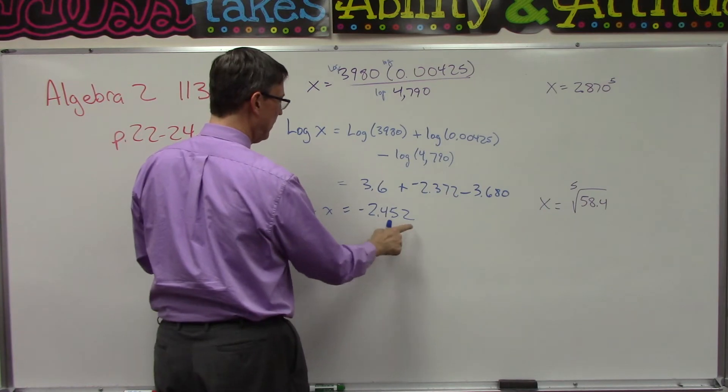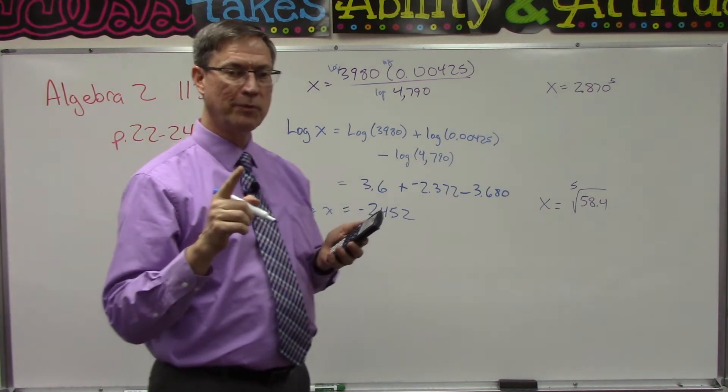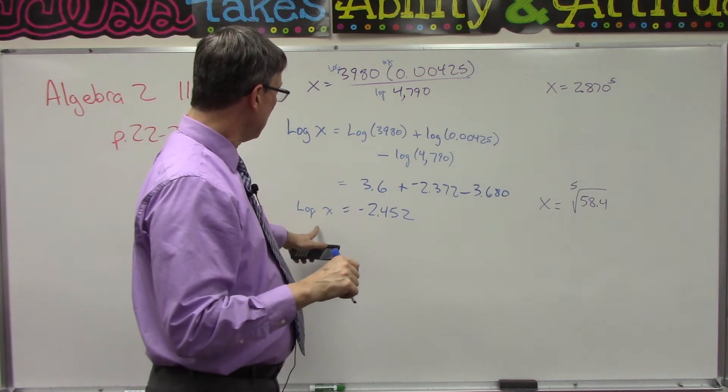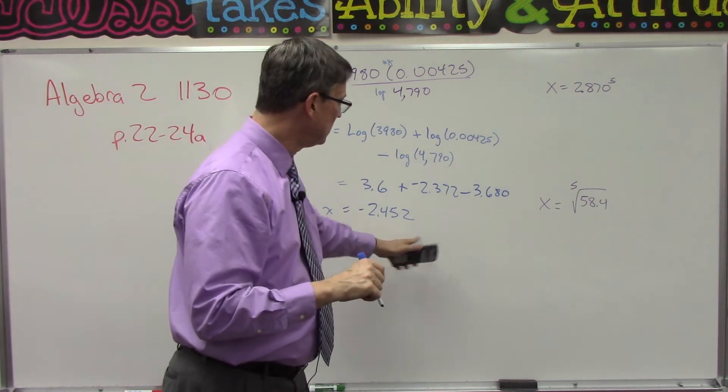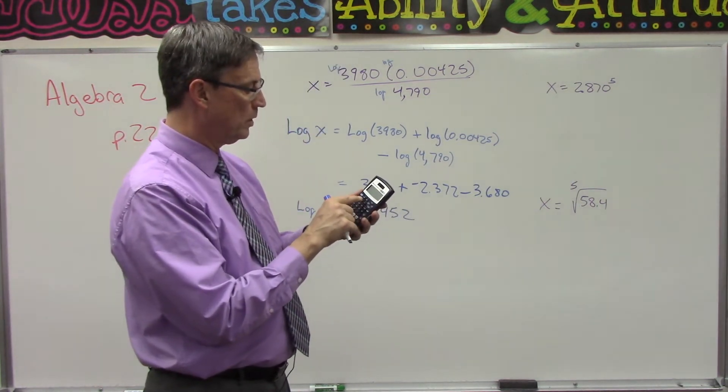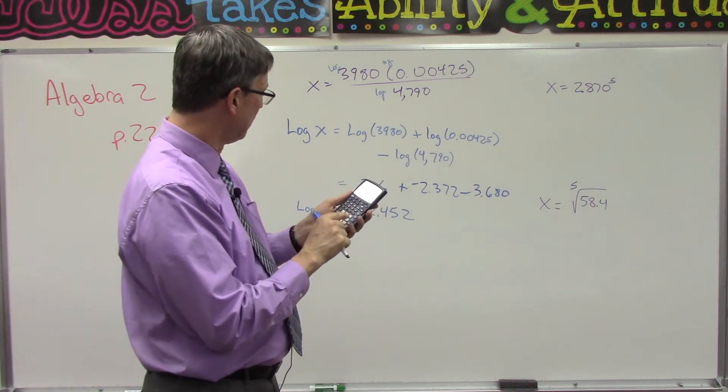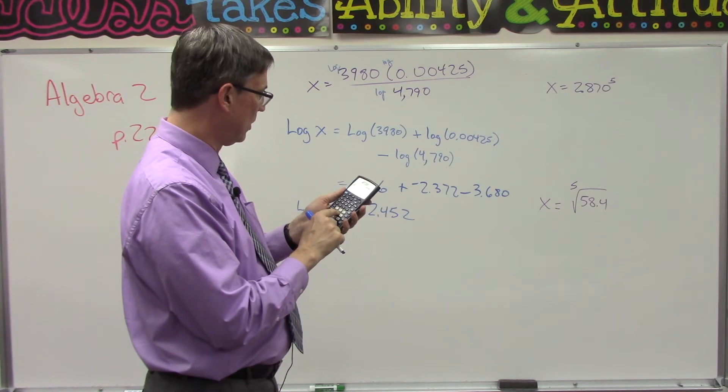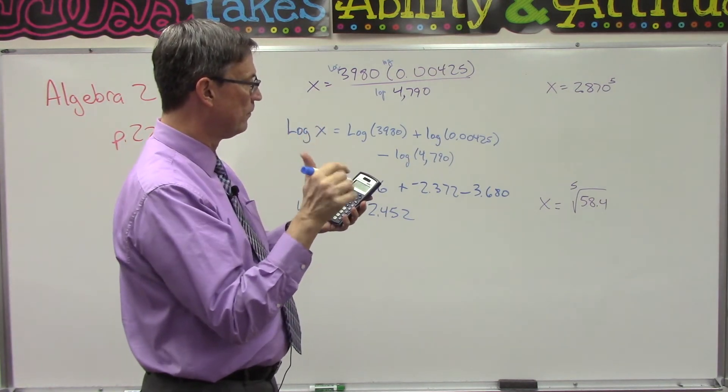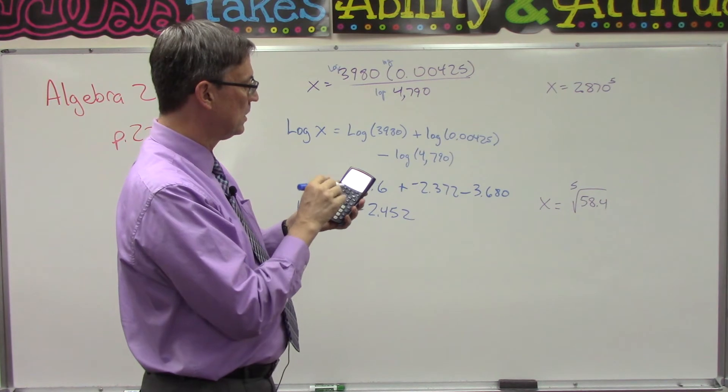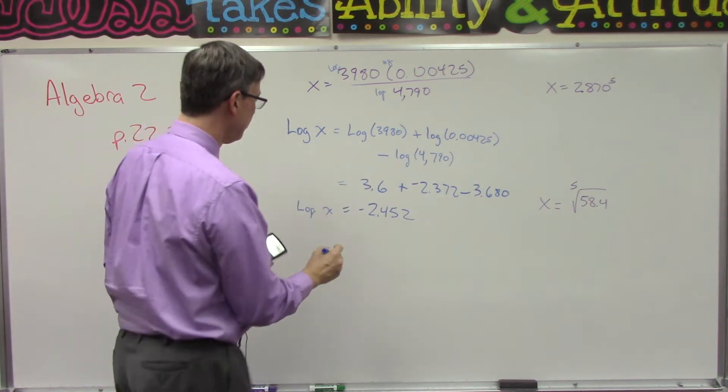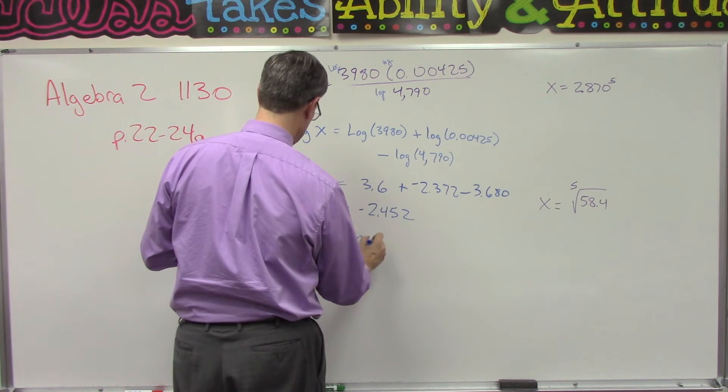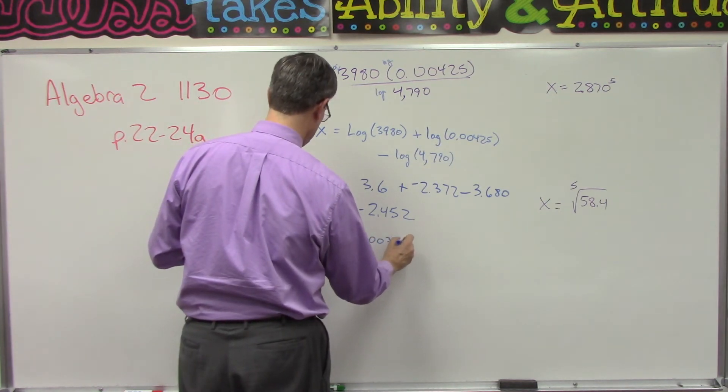Now look, this is the log of x. The log of x equals negative 2.452. So remember in the last lesson, right before the checkup, to find x we have to have 10 raised to that power. So now I'll clear it and do second function log and plug in the negative 2.452 equals 0.00353. So x equals 0.00353.